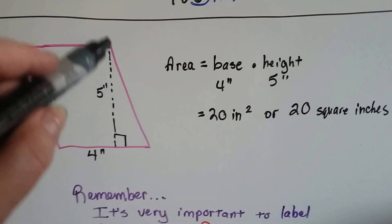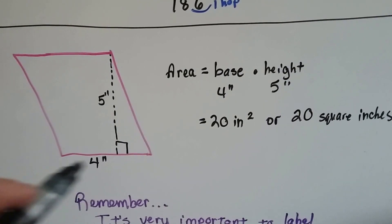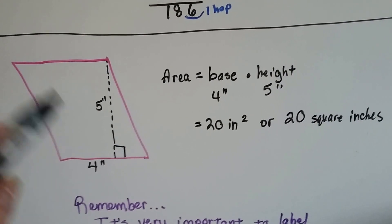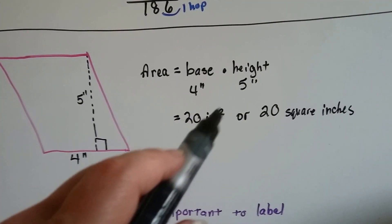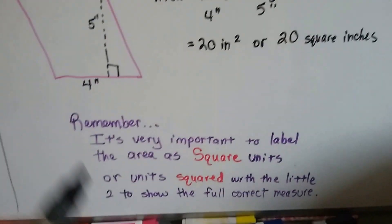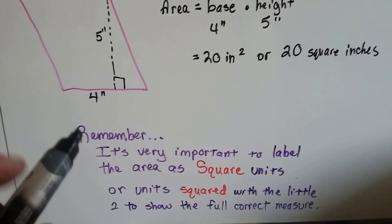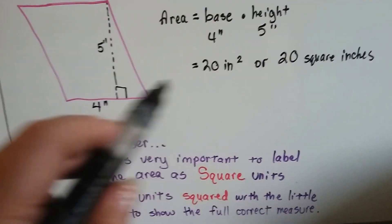If the height is 5 inches and the base is 4 inches, we just do 4 times 5 and we get 20 inches squared or 20 square inches. So remember, it's very important to label the area as square units.